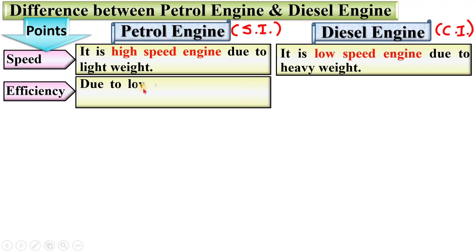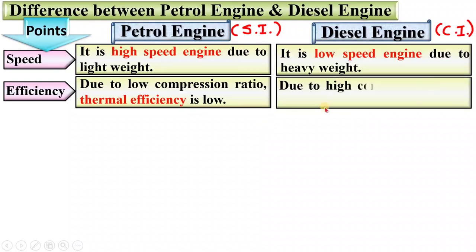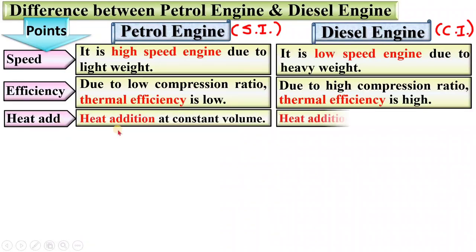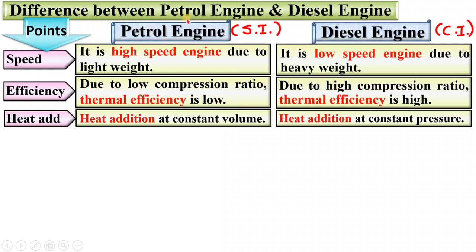Efficiency: due to the low compression ratio, thermal efficiency is low in petrol engine. In case of diesel engine, due to the high compression ratio, thermal efficiency is high. Regarding heat addition, it occurs at constant volume in case of petrol engine, whereas in case of diesel engine, heat addition is at constant pressure.